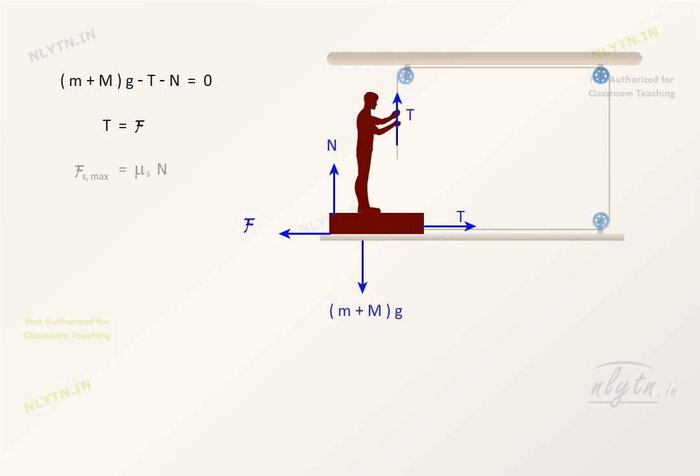And as we know that the maximum value of static friction is equal to the coefficient of static friction into normal reaction, therefore we have T less than or equal to μₛ into N.